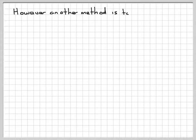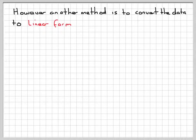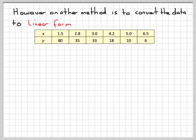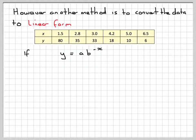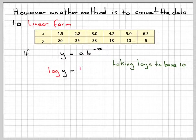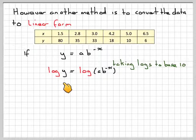Another method is to convert the data to linear form. Here is the data again. If y equals a, b to the minus x, then if we take logs of both sides to the base 10, it can be to any base, so I get log to the base 10 of y equals log to the base 10 of a, b to the minus x.